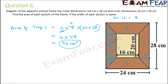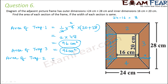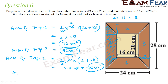Trapezium 1 and trapezium 3 are exactly identical, so the area of trapezium 3 is also 96 cm². For trapezium 2: area = ½ × height × (sum of parallel sides) = ½ × 4 × (16 + 24) = ½ × 4 × 40 = 80 cm². Similarly, trapezium 2 and trapezium 4 are identical, so the area of trapezium 4 is also 80 cm².